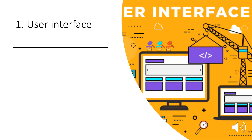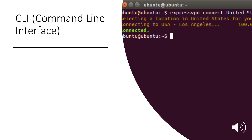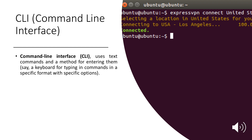User interface: Almost all operating systems have a user interface. This interface can take several forms: CLI (command line interface), batch interface, and GUI (graphical user interface). Command line interface uses text commands and a method for entering them, such as a keyboard for typing in commands in a specific format with specific options.